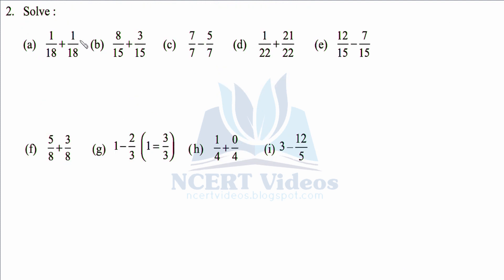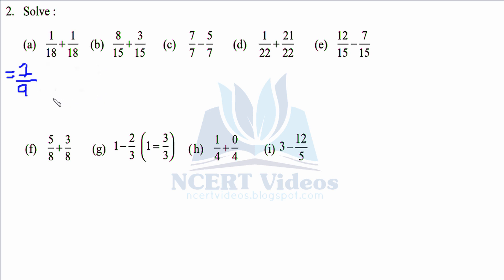Question 2: You have to solve various fraction questions. In the first part, the denominators are the same — both 18 — so the LCM is 18. Adding the numerators: one plus one equals two over 18, but this can be further reduced by factor 2, giving one over nine as the answer. In the second part, 15 is the common denominator; simply add the numerators: eight plus three gives eleven over 15. That is not further reducible, so that is your answer.